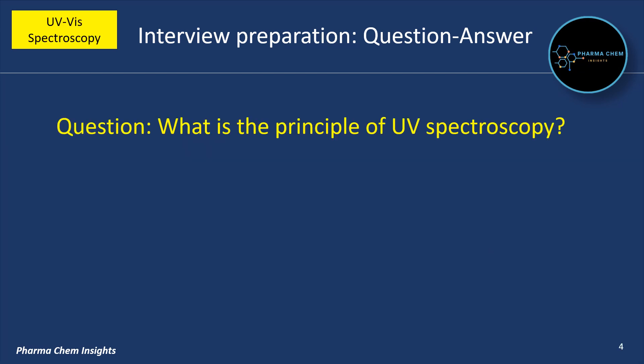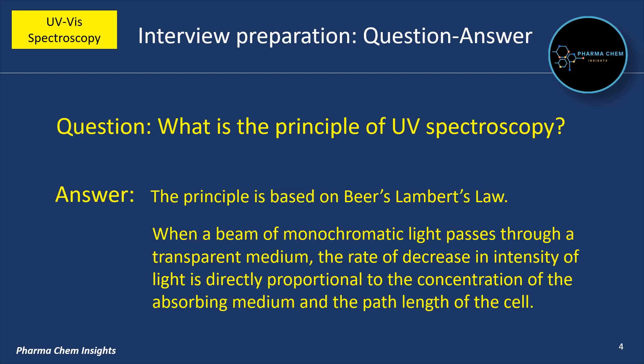Next question: what is the principle of UV spectroscopy? The principle is based on Beer-Lambert's law, i.e., when a beam of monochromatic light passes through a transparent medium,